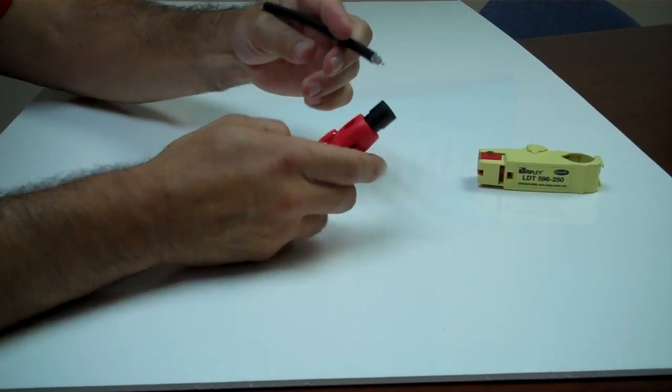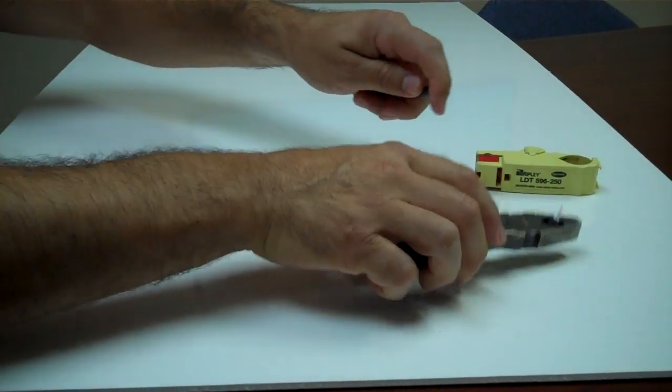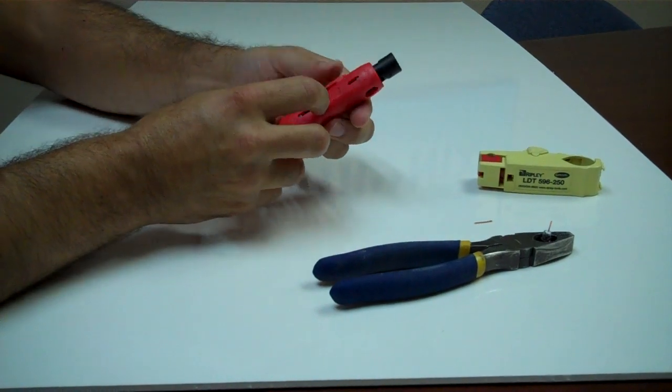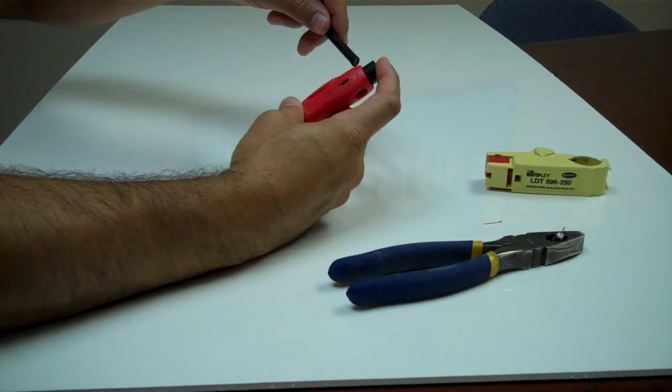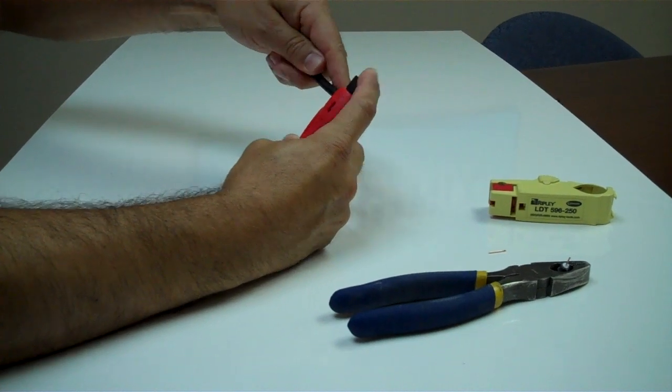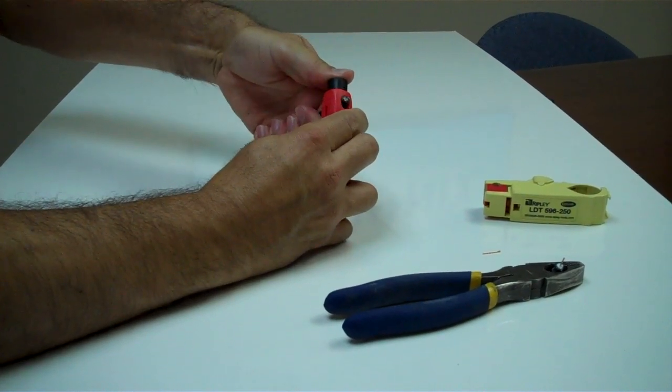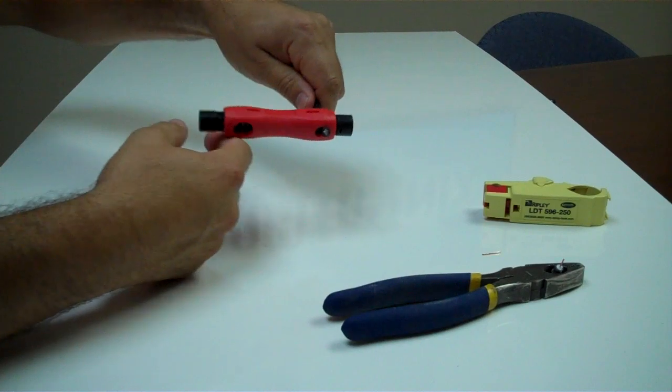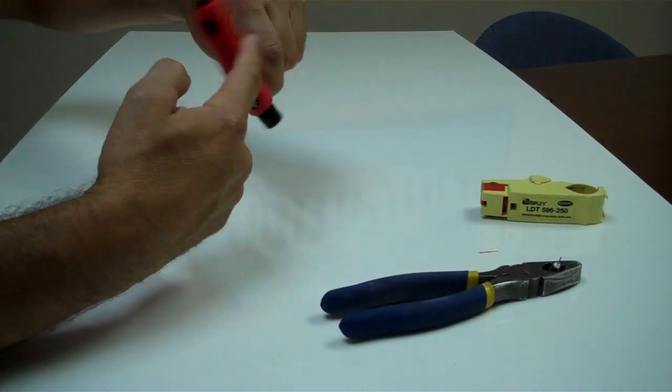You simply cut this end off, and what we're going to do is we're just going to insert it into your tool, just so that it's flush with the other side, give it a couple turns, and then just pull.